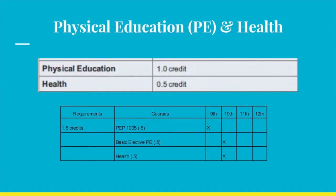One credit in PE is obtained with a half credit in PEP 1005 or 9th grade PE, and a half credit in a basic PE elective like PEP 1010 or 10th grade PE, swimming, physical fitness, etc. Weight training and team sports count as electives — they do not meet the PE graduation requirement.